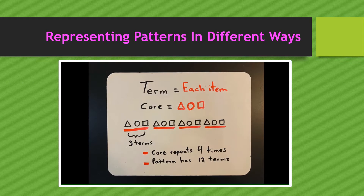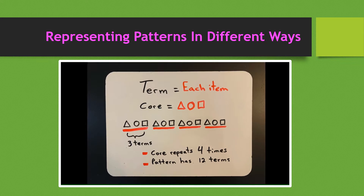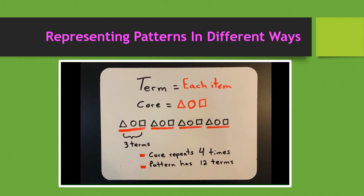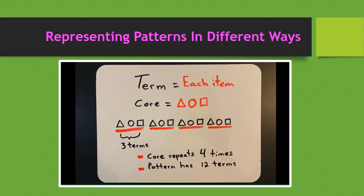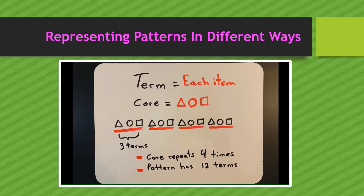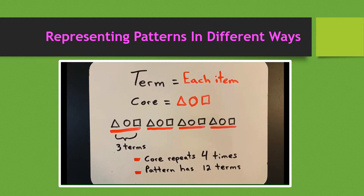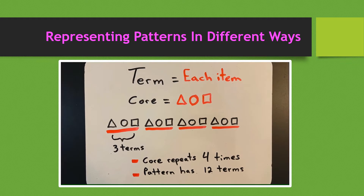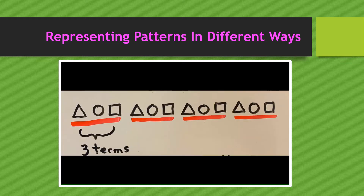Before we get started on today's lesson, let's review a little bit of vocabulary. A term is the items within a pattern, and the core is the group of terms that repeats. So if we take a closer look at this pattern, triangle, circle, square is the core, and there are three terms in the core.